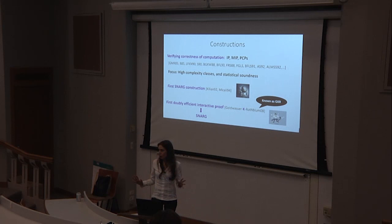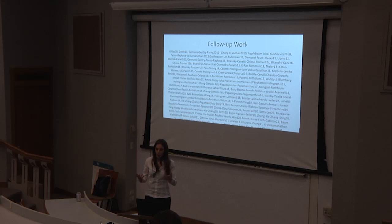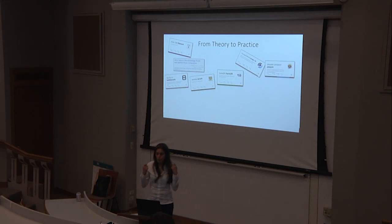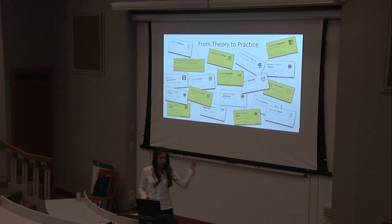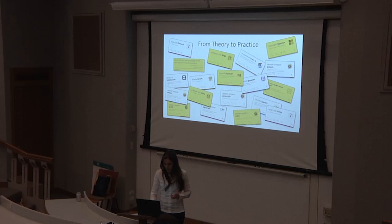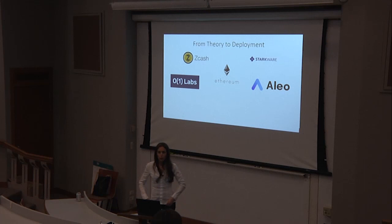GKR is a very efficient interactive protocol that can be converted into a SNARG, and it started an explosion of work. A lot of this is theoretical but also practical — many systems have been built and prototyped. It's not just academic: these are actually deployed. Companies like Ethereum are using these SNARGs today, and DARPA has a large project on constructing better SNARGs.